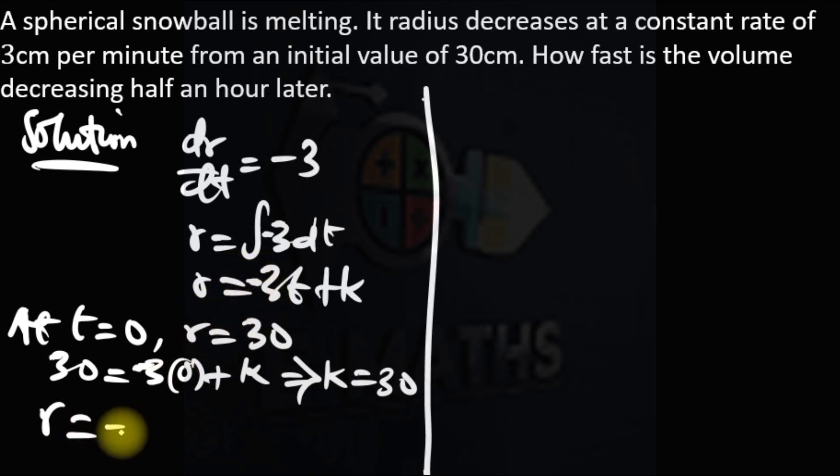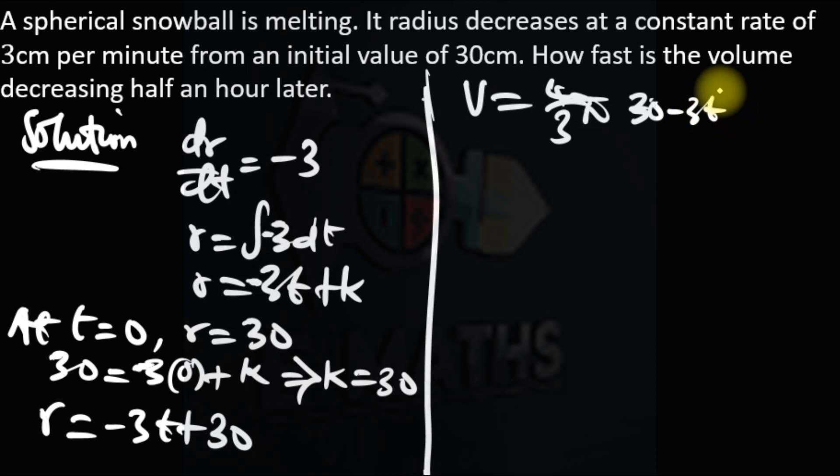So the equation of the radius is now r is minus 3t plus 30. The volume is decreasing. We know that volume of a sphere is 4 over 3 pi r cubed, and our radius is 30 minus 3t raised to power 3.